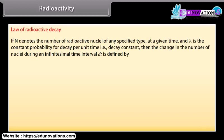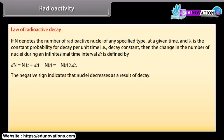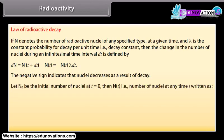Law of radioactive decay: If N denotes the number of radioactive nuclei of any specified type at a given time, and lambda is the constant probability for decay per unit time (that is, the decay constant), then the change in the number of nuclei during an infinitesimal time interval dt is: dN = N(t+dt) − N(t) = −N(t)·λ·dt. The negative sign indicates that nuclei decrease as a result of decay. Let N₀ be the initial number of nuclei at t = 0; then N(t) = N₀ · e^(−λt).